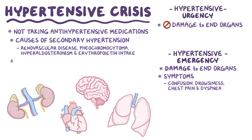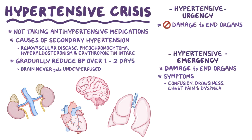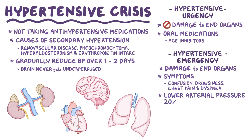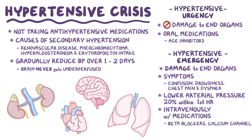For treatment, it's important to gradually reduce the blood pressure over one to two days to make sure that the brain never gets underperfused. Treatment of hypertensive urgency is done with oral medications like ACE inhibitors. In a hypertensive emergency, the goal is to lower the mean arterial pressure by 20% within the first hour, and treatment is given intravenously with medications like beta blockers, calcium channel blockers and vasodilators like nitroprusside and nitroglycerin.